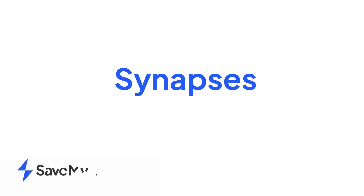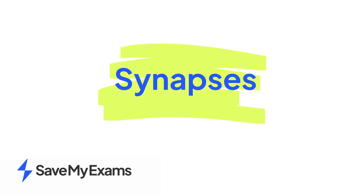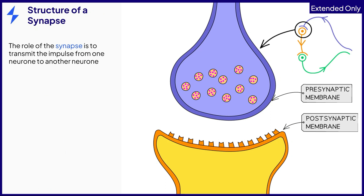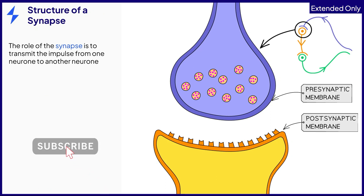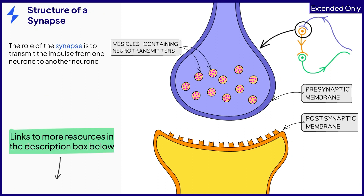This video is on the topic of synapses. The diagram shows the structure of a synapse. Here we have two neurons. The purple represents a sensory neuron and contains vesicles containing neurotransmitters.